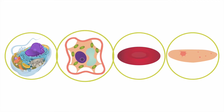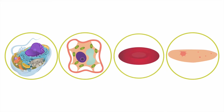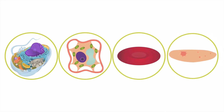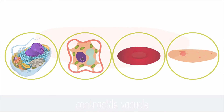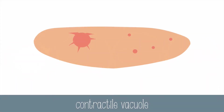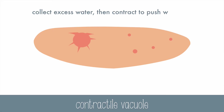Cells need to have a way to deal with hypotonic environments, and there are several ways that an organism will do it. Freshwater paramecium live in hypotonic environments, so to avoid becoming so full of water that they burst and die, they have special contractile vacuoles which collect excess water, and then contract to push water out.